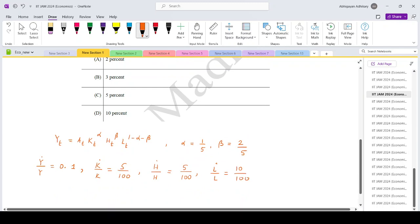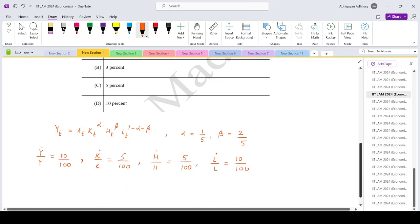So maybe writing the first one also as 10 by 100. From here we need to find out a dot by a, the growth rate of technology.